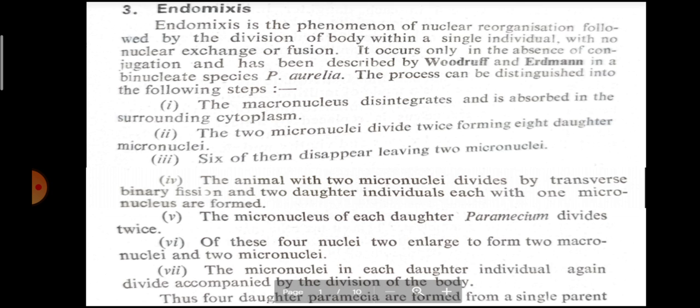Micronuclei फिर से divide करती हैं, division of body के साथ जाती हैं, इसलिए दो जो बनते Paramecia, उससे फिर से दो और बनते हैं, और अन्ततः चार daughter Paramecia बन जाते हैं एक single parent से.